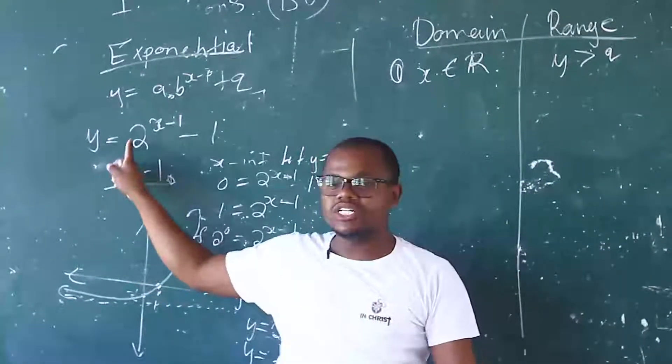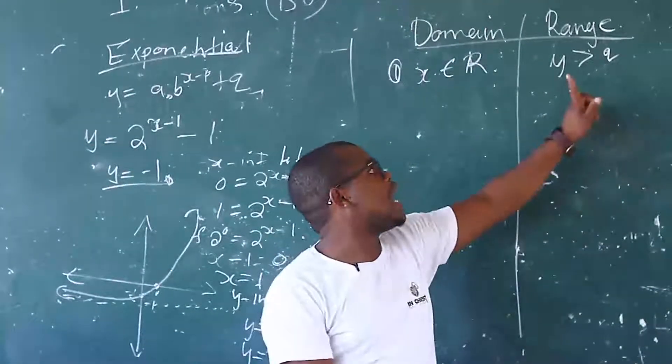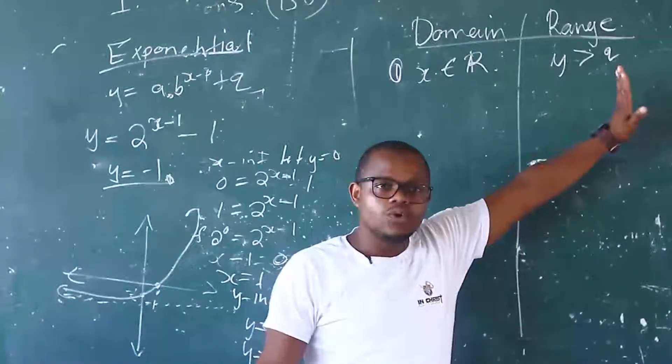If A is negative, then Y must be less than Q. Okay?